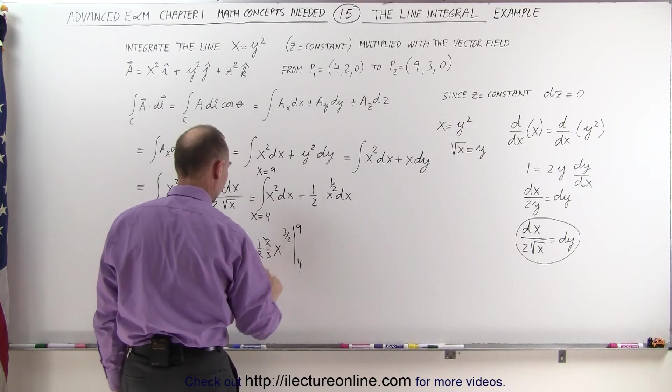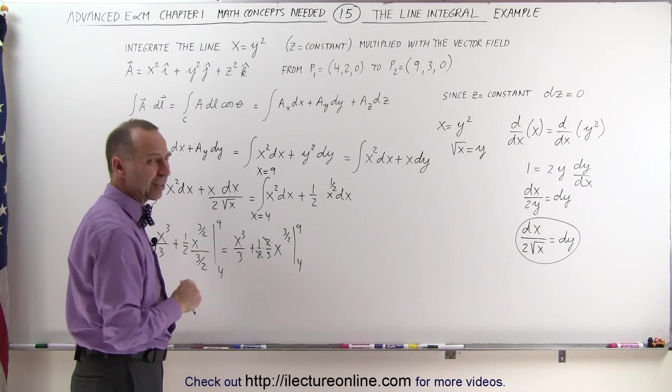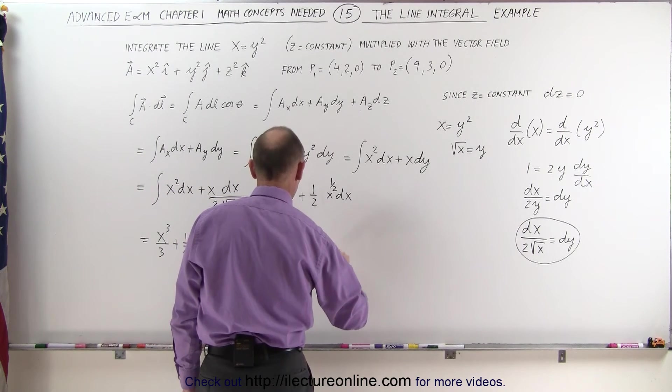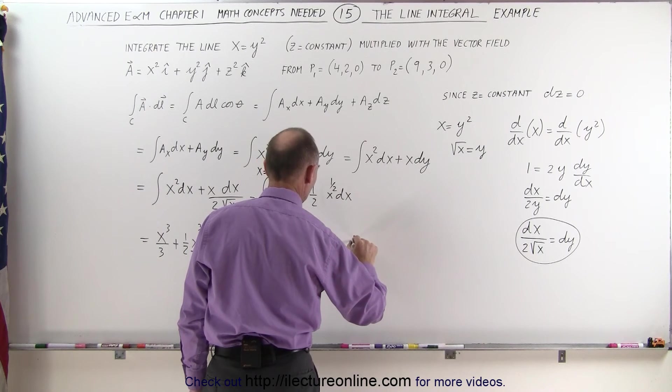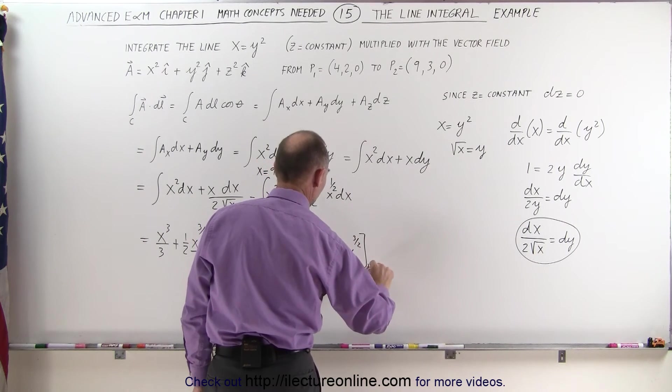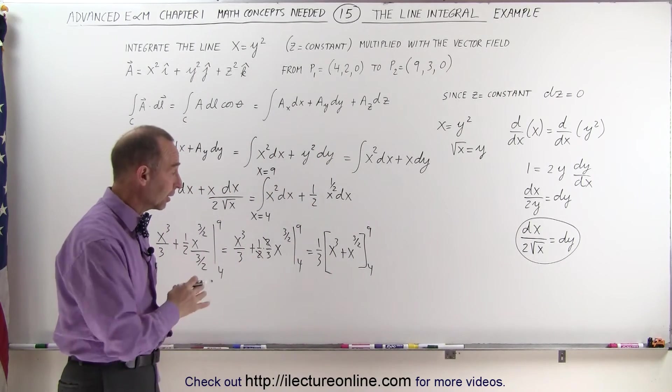And of course, these two cancel, and then we have one-third, which we can actually factor out. So this becomes equal to one-third times x cubed plus x to the three-halves from x equals 4 to x equals 9. Now we're ready to evaluate that by plugging the upper limit.